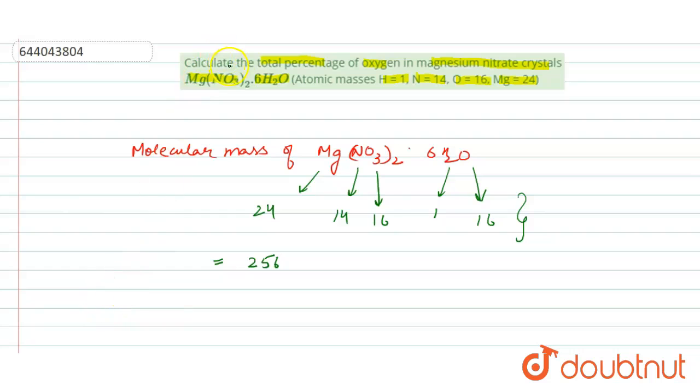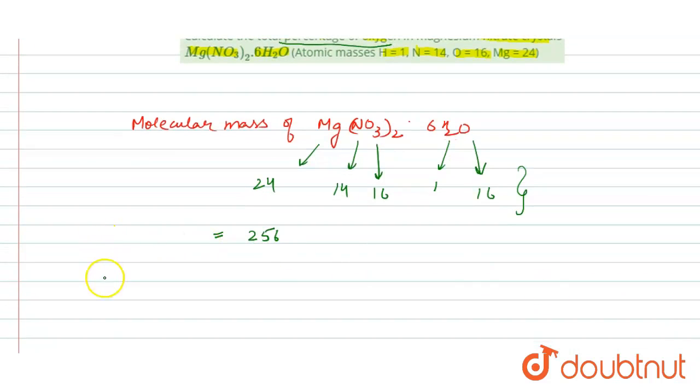The question is calculate the total percentage of oxygen. So for this we have to calculate the total mass of oxygen atoms present in magnesium nitrate crystals.